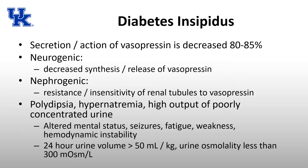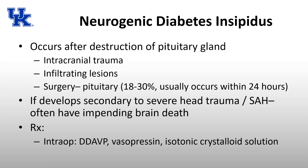These patients can present with altered mental status, seizures, fatigue, weakness, hemodynamic instability, and it can actually be life-threatening because of the degree of hypovolemia and hypernatremia. To diagnose diabetes insipidus, the 24-hour urine volume needs to be greater than 50 mL per kilogram, and the urine osmolality is less than 300 milliosmoles per liter — a large volume of very dilute urine due to the lack of vasopressin action.